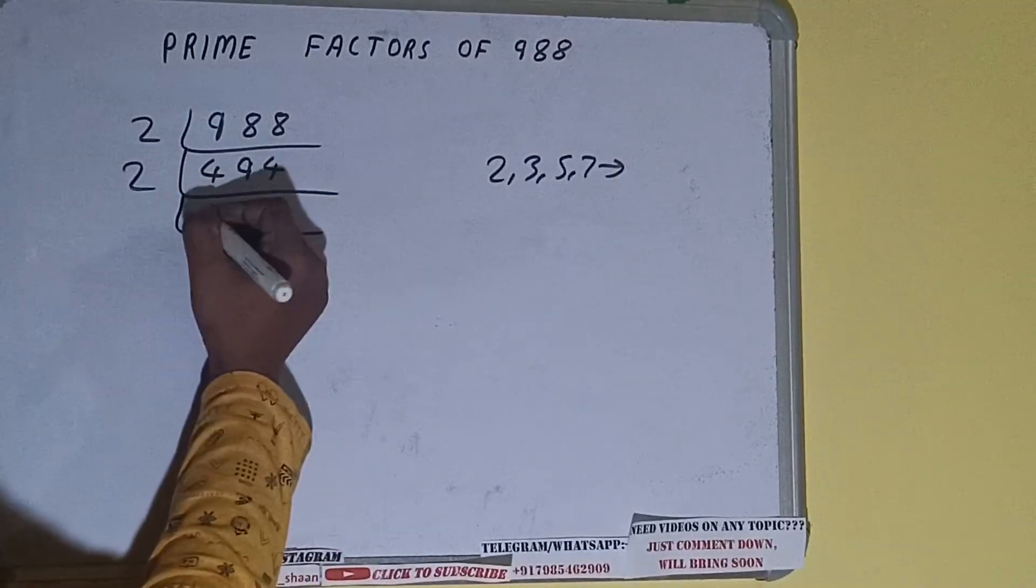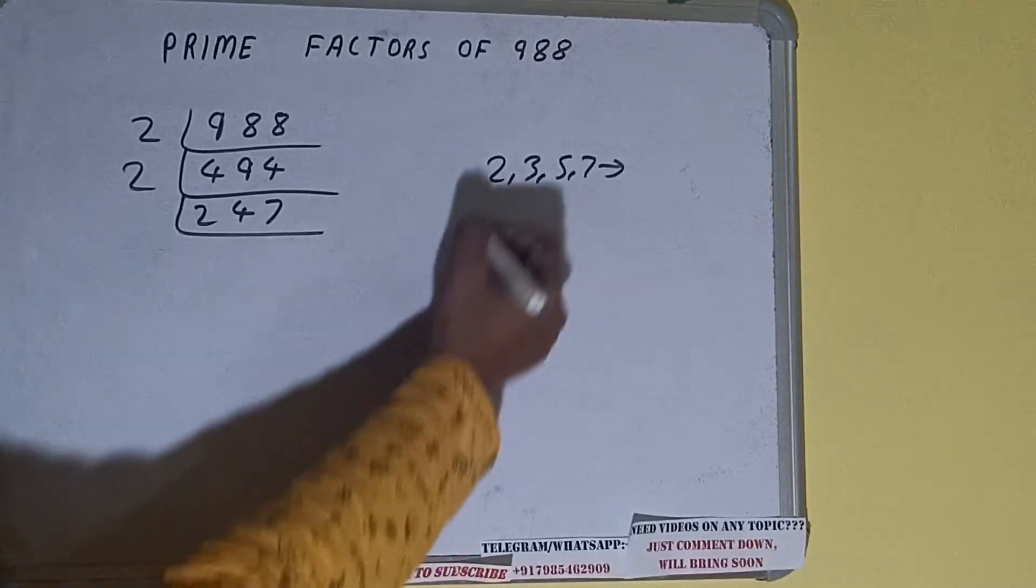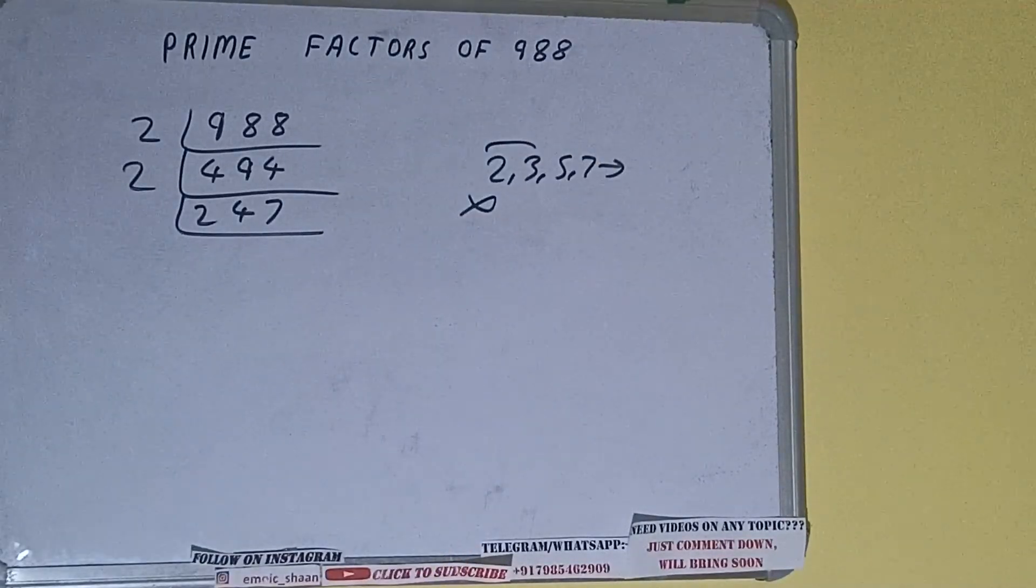Now is this 247 divisible by 2? The answer is no because the number is odd. So we'll check with the next lowest prime number, that is 3. Is it divisible by 3? Let's check.